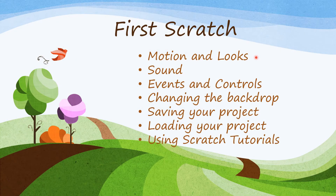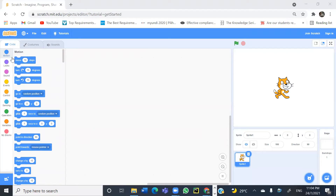In our first Scratch project, we will be using motion, looks, sound, events, and controls. We will learn how to change the backdrop, save your project, load your project, and also look at the Scratch tutorials. In the code tab, the first set of blocks controls the motion of an object. In Scratch, the object is called a sprite. The name of this sprite is sprite1, which is an image of a cat. We can change it to a more meaningful name, so let's call it cat sprite1.